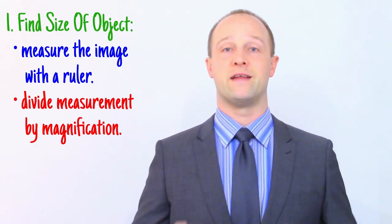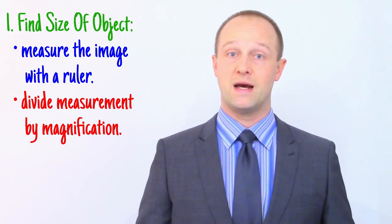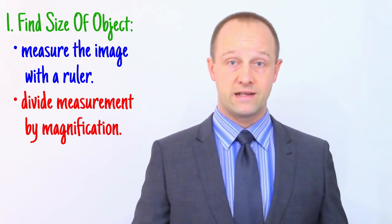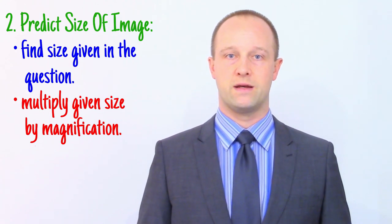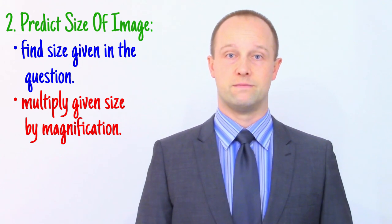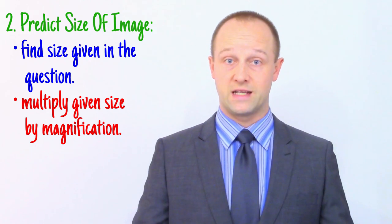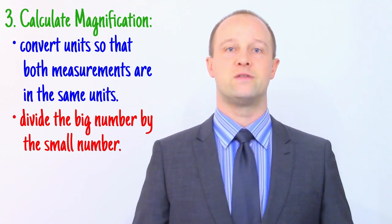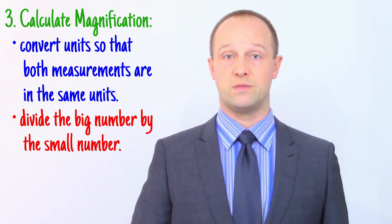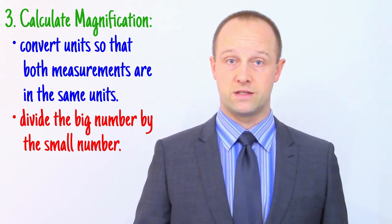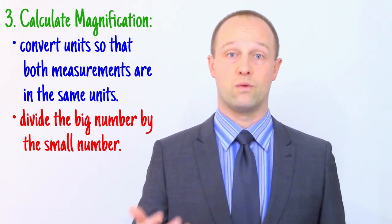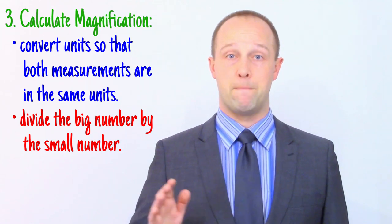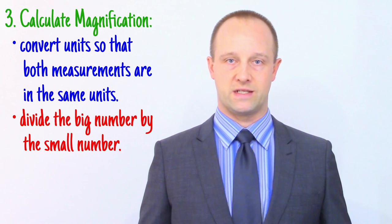So, there are three possible types of question you might be asked. Firstly, they might ask you to find the size of an object, like a cell, based upon measurements of a diagram and the magnification. Take the measurement and divide by the magnification because you're trying to get a smaller number. Secondly, they might ask you to say what size the image of an object would appear, giving you the real size of the object and the magnification. This time, just take the measurement and multiply by the magnification because you're trying to get a bigger number. Thirdly, they might ask you to calculate the magnification itself, given the real size of the object and the measurement of the image. First, convert the units, and it's probably easiest to convert the image units to the same as the object's units by multiplying by a thousand or a million or a billion, depending on what those units are. Then, just divide the big number by the small one to find out how many times bigger it is. And that's your magnification.